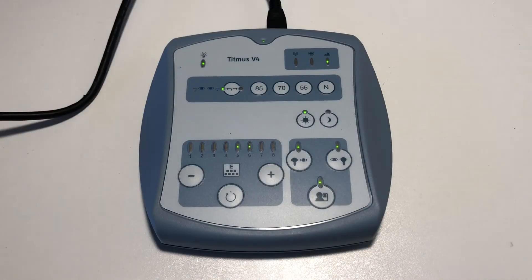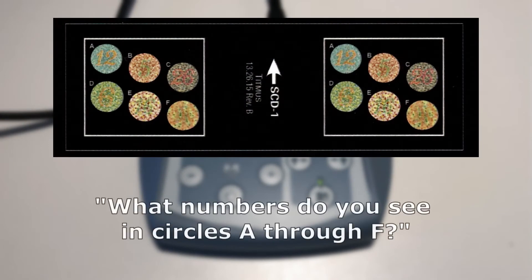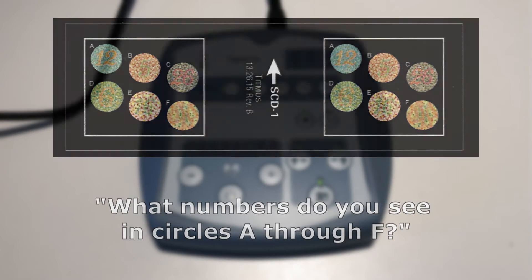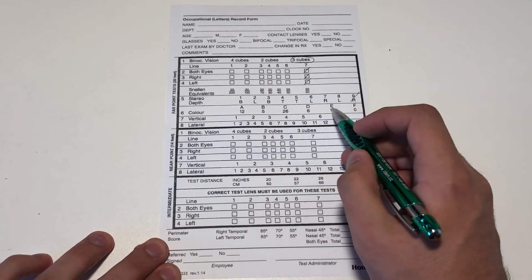Advance to slide number six. This slide tests for red-green color perception. Ask the patient, what numbers do you see in circles A through F? Record the results by putting a slash through each incorrect answer.